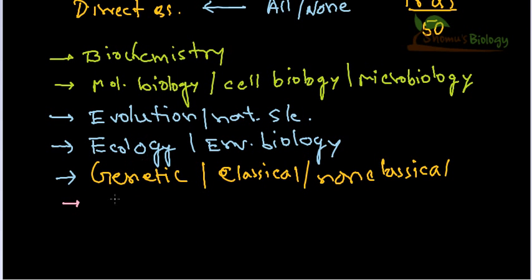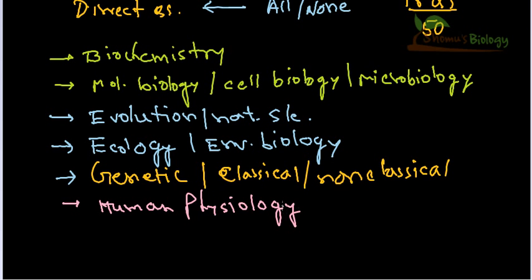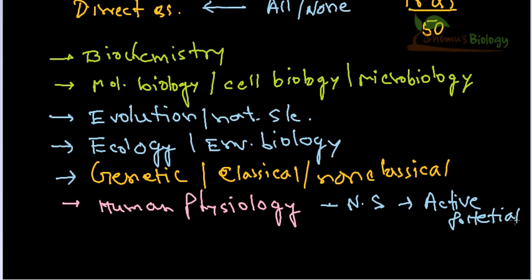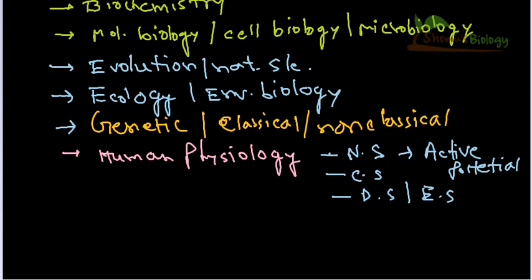They also give some questions from human physiology. Most of the time, questions from human physiology focus on the nervous system, particularly action potential and nerve potential. The circulatory system and digestive system are also important, along with the excretory system. These four systems are required, with the nervous system and excretory system being the highest-yielding.